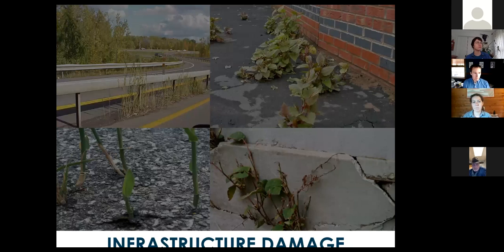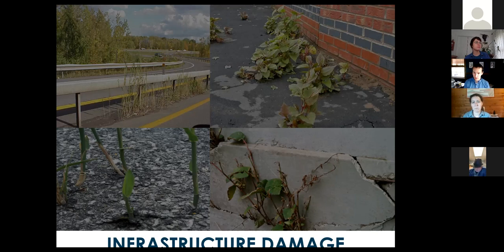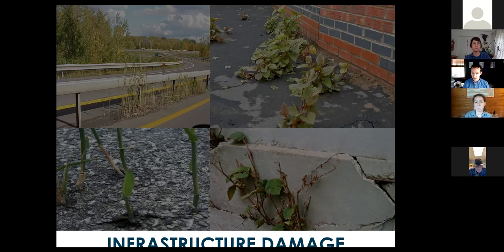Some of these plants are tenacious and can cause direct damage to built infrastructure. Both Japanese knotweed and common reedgrass have tough rhizome systems capable of growing through three inches of asphalt or concrete — through road shoulders, sidewalks, jersey barriers, and other concrete walls or infrastructure — decreasing the longevity of that infrastructure, which has both maintenance time and monetary impacts. Things just don't last as long and require more resources to maintain.